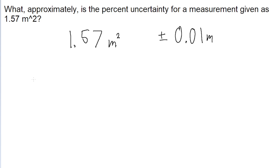So to take the percent uncertainty, all we got to do is take the uncertainty, which is meters squared by the way, not meters. Don't do what I did and write your units wrong. The uncertainty divided by the measurement itself.